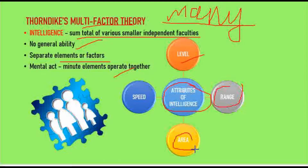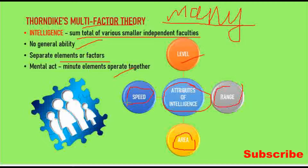And coming to Area. Area refers to the total number of situations at each level — how intelligent a person is across the total number of situations they face. And coming to Speed — how rapidly a person is able to respond to a situation.